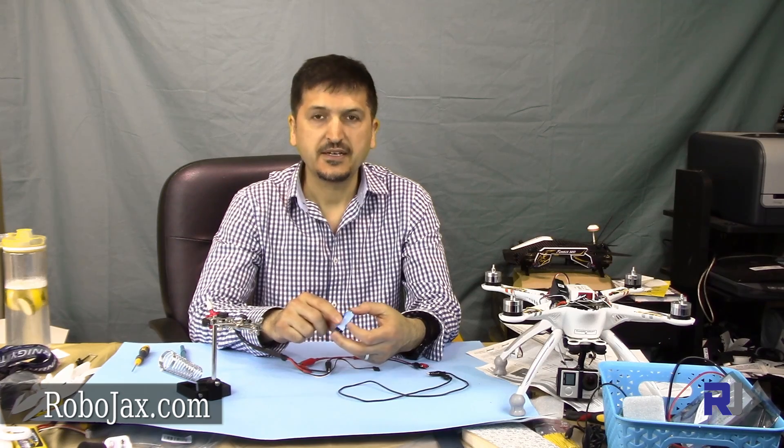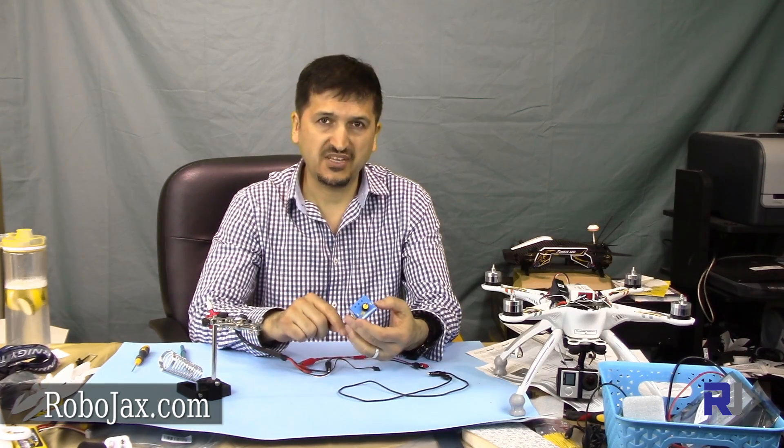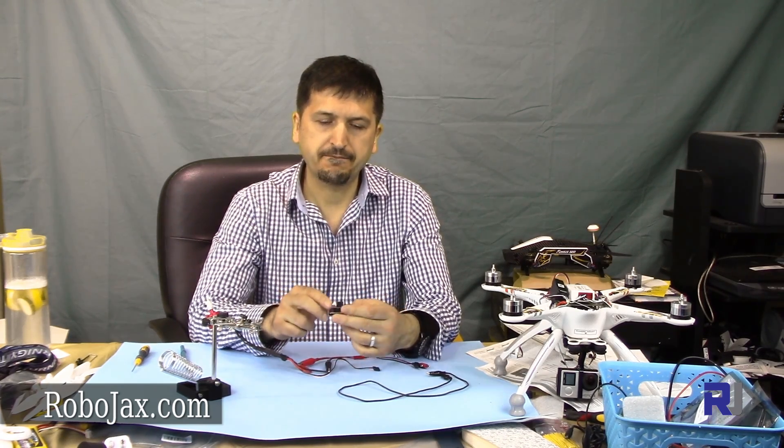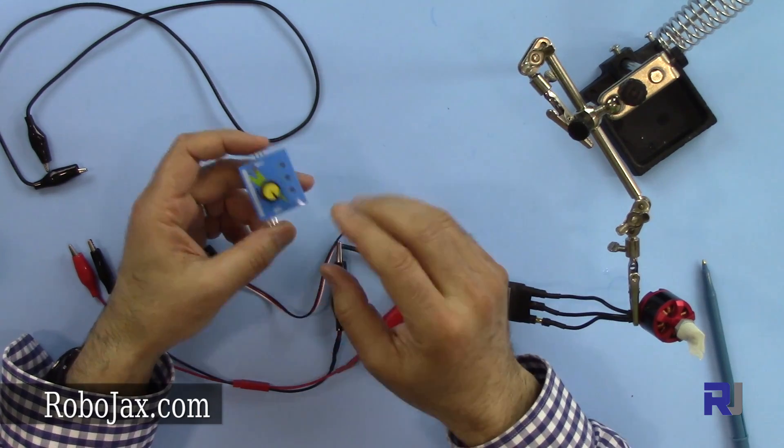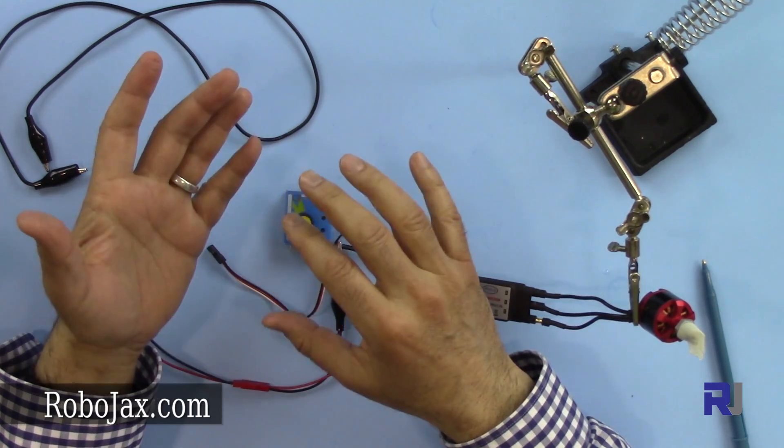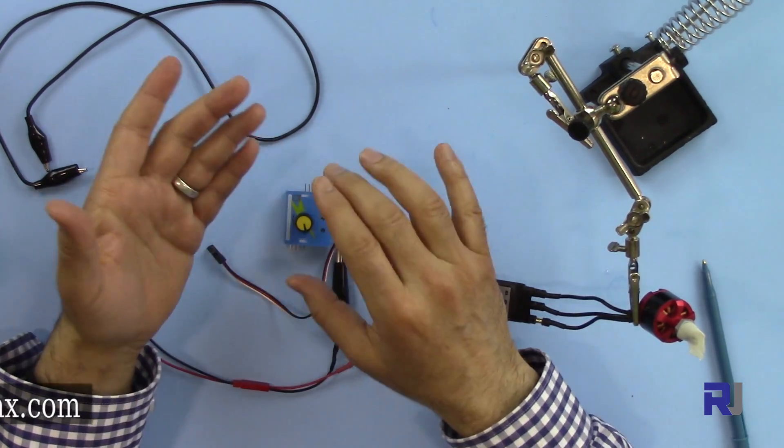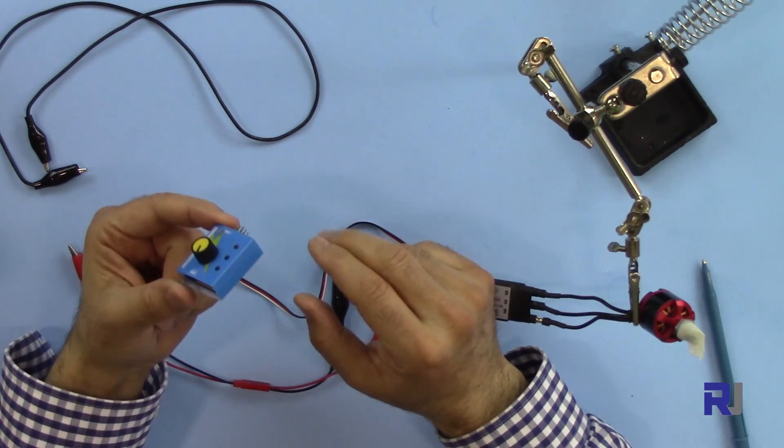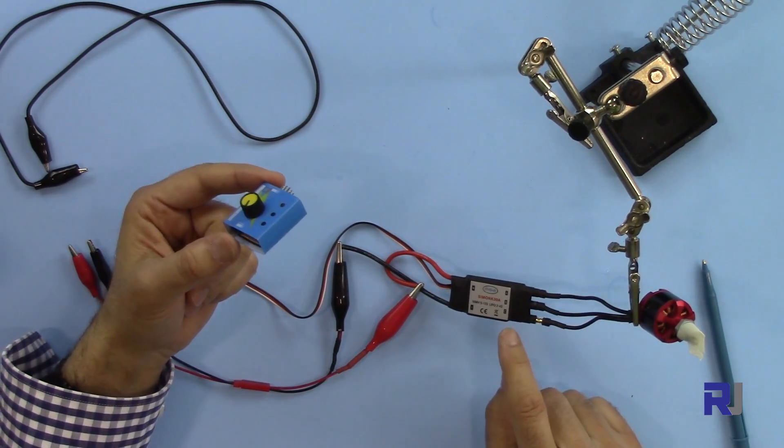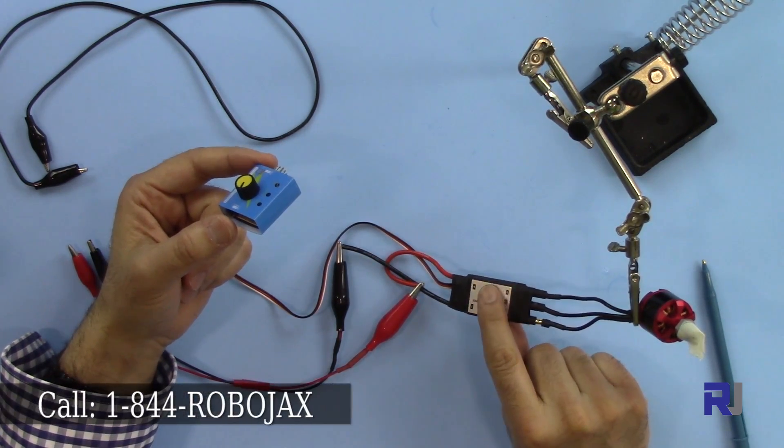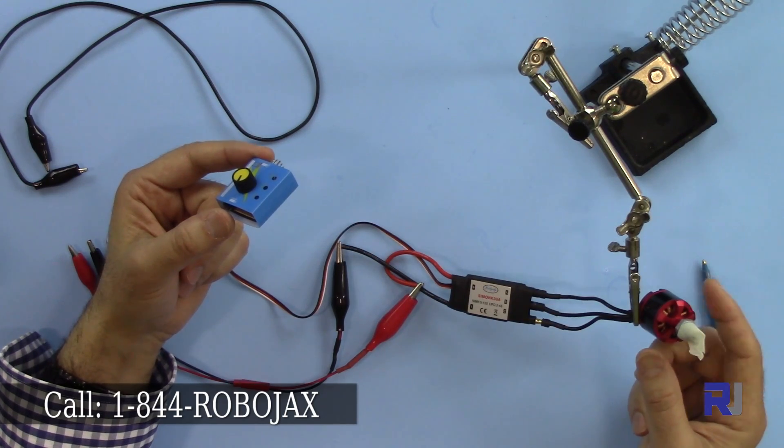To test the servo or test your motor, you need a receiver and a lot of complicated setup. If you don't have a drone or if you have a drone, you have to disconnect so many things. So this makes your life easy to test your ESC and also make sure that you can test your motor.